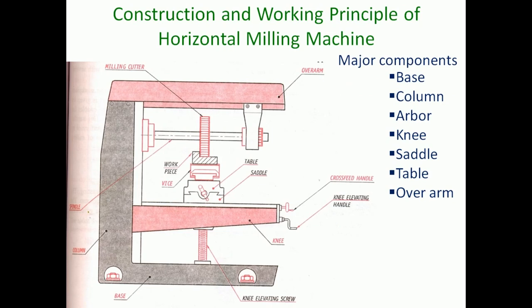The construction and working principle of the horizontal milling machine: there are two types — horizontal and vertical. In the horizontal milling machine, the major components are the base, column, arbor (on which the milling cutter is mounted), knee (on which the saddle and table are mounted), saddle, table, and over arm (which supports the milling cutter spindle at the other end using a yoke).